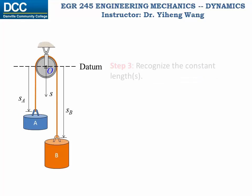Step 3: Recognize the constant length in the system. For example, for this piece of rope that wraps around the top semicircle of the pulley, although it also moves but the length is always a constant. Let's call it L-semi for now.